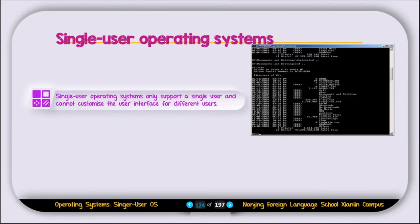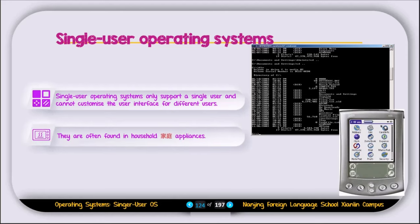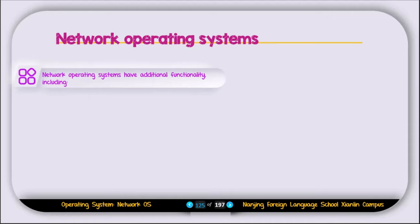Let's talk about the different types of operating systems. The first type is called the single-user operating system. A single-user operating system only supports a single user and cannot customize the user interface for different users. These are often found in household appliances like microwaves or washing machines.